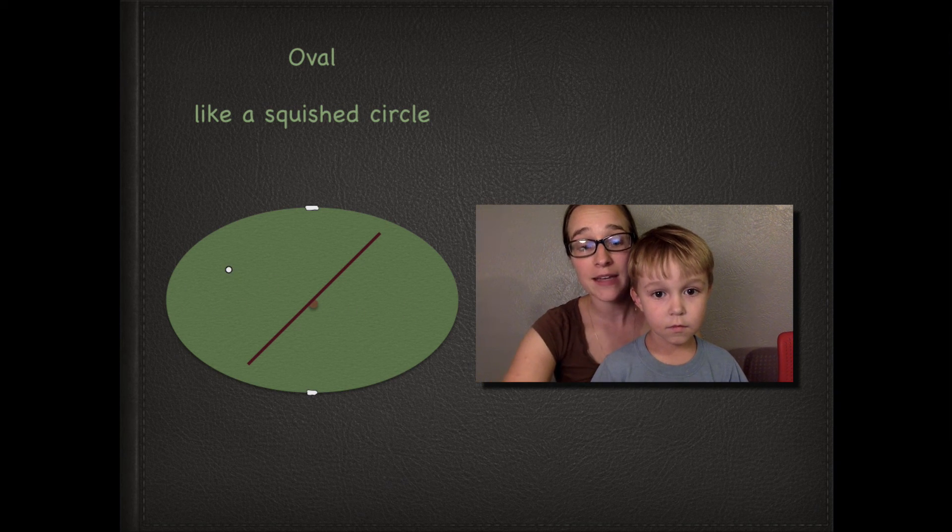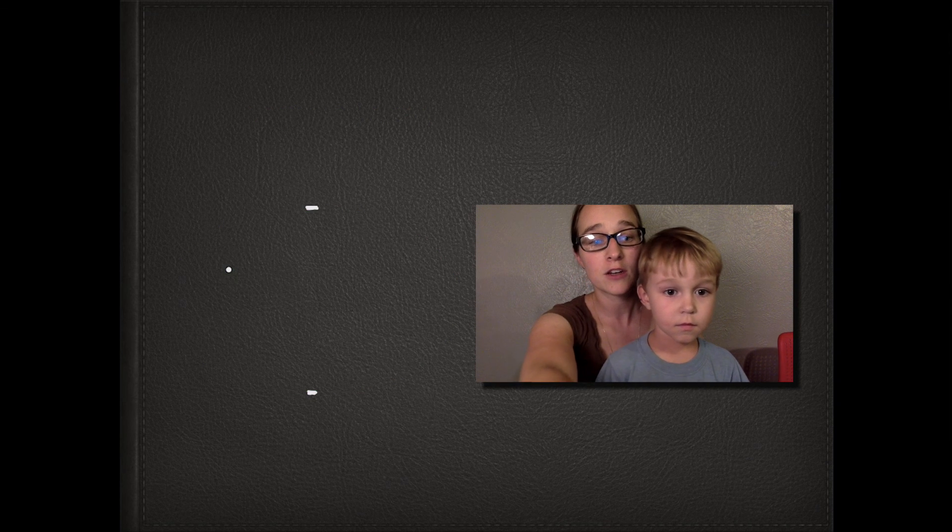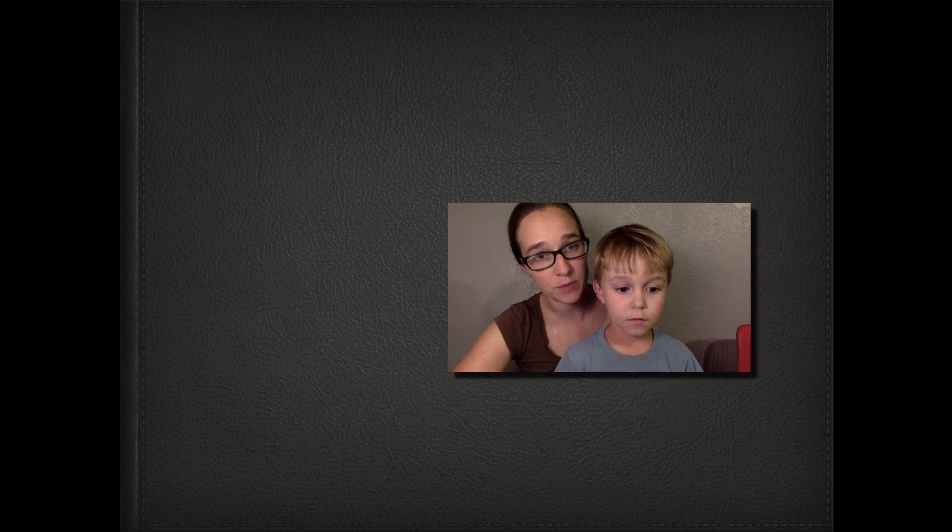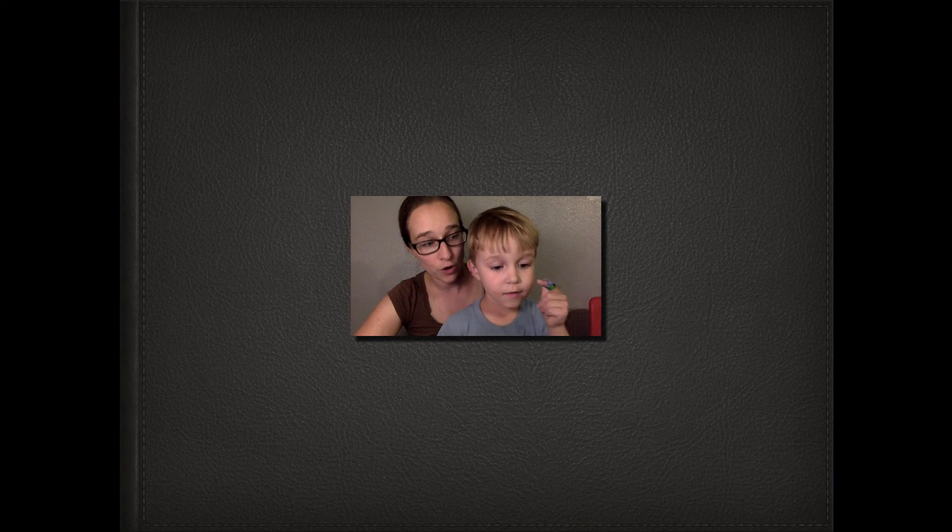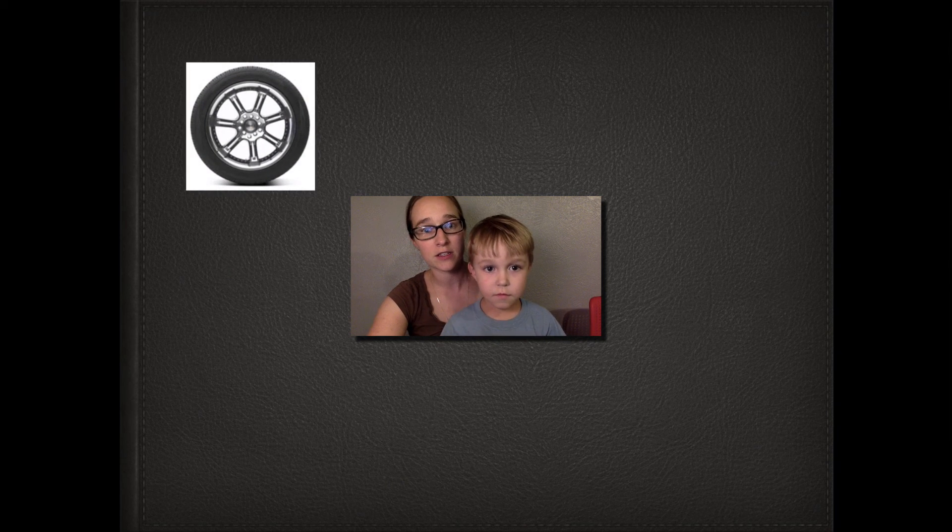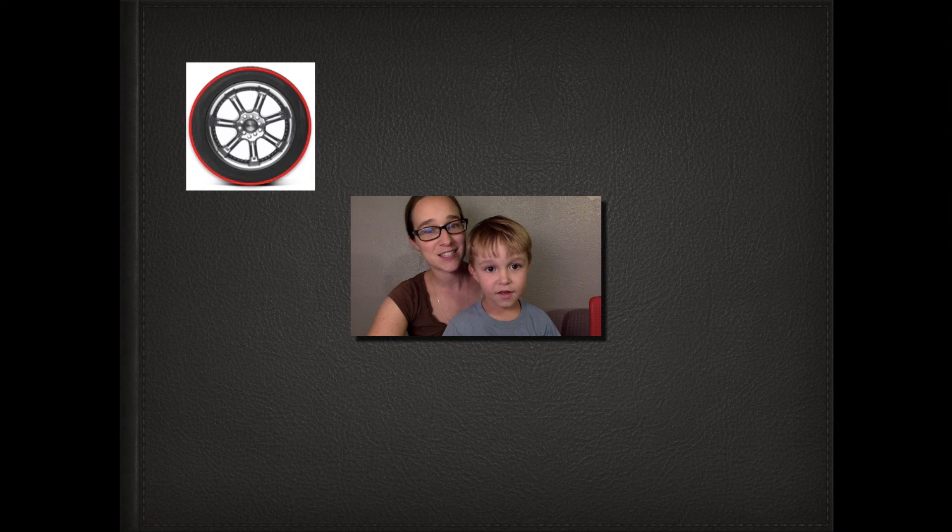So now let's look at some of our shapes in real life. And Mikey, you're going to tell us which one of these shapes is a circle or an oval. Are you ready? Okay. Yeah, I'm ready. All right, here we go. So look at the tire. Is the tire a circle or an oval? Circle. You got it. It's a circle.